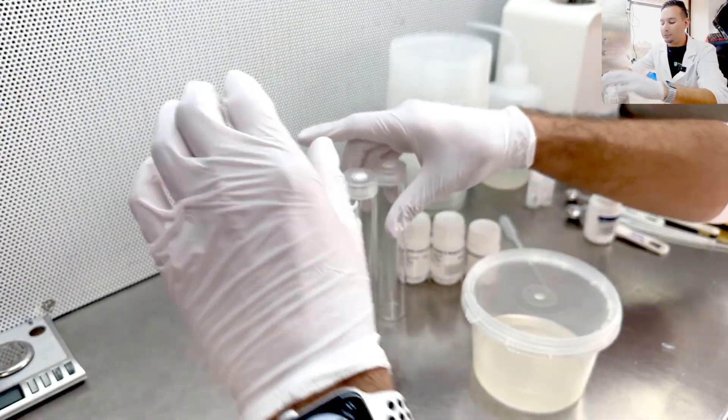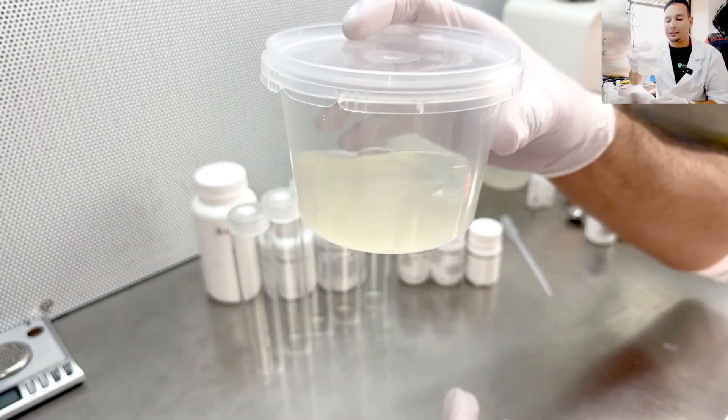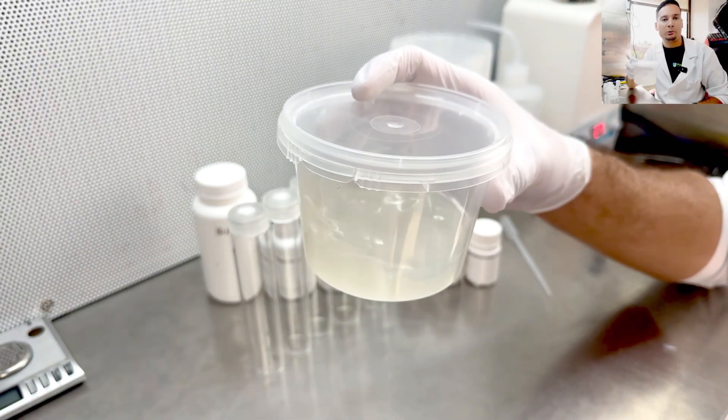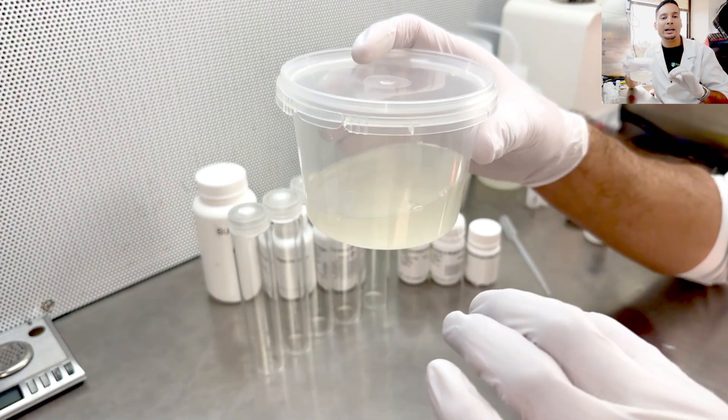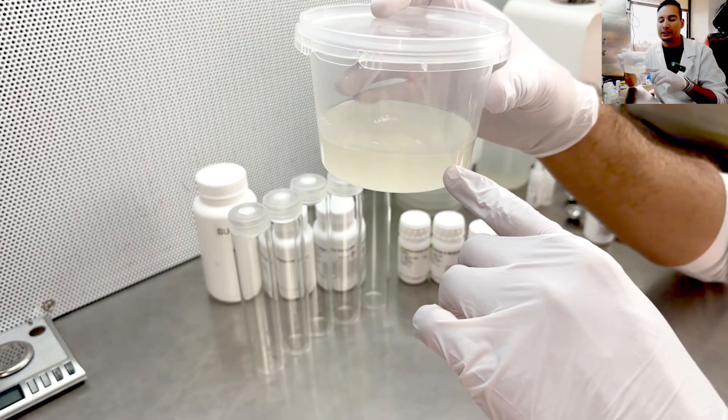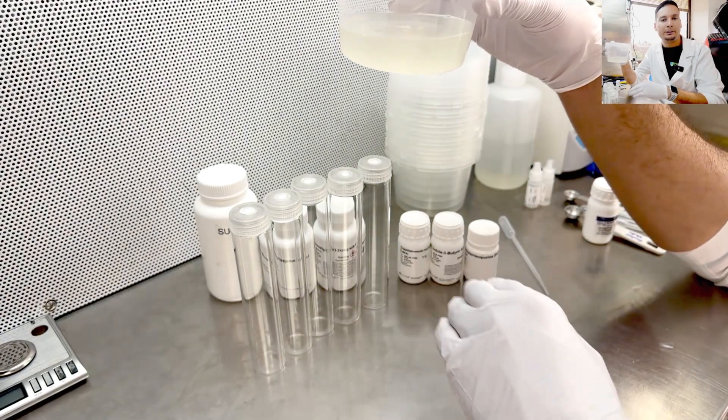I will show you how to pour the media in the test tubes. What I'm going to do is take my media that is done here and place it in the microwave for about a minute to a minute and a half. I just need the media to lightly boil. That is going to get the agar to completely dissolve, and then I can pour it into my test tubes.